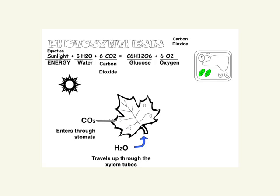The water comes up through the xylem, which is in the trunk of the tree — through the roots, into the trunk, into the little leaves and stems and stuff like that. They soak up all that water from the ground. That's what the roots do. So the water and the CO2 come together.